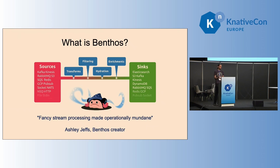What kind of operations? You can do transformations — imagine a schema migration for various messages. Filtering — if you want to drop some messages you don't care about, you can just do that. Or hydration — if certain fields in the messages need to be adjusted or hydrated. Or enrichments — if you want to get data from some other source, put it in the original message to enhance it, and then send it to the output.